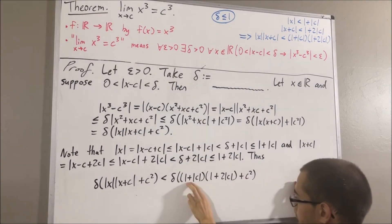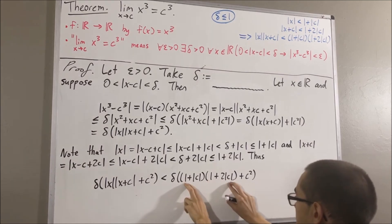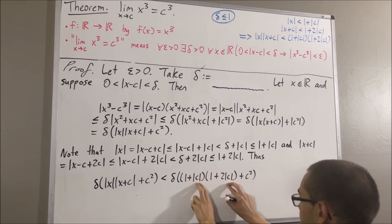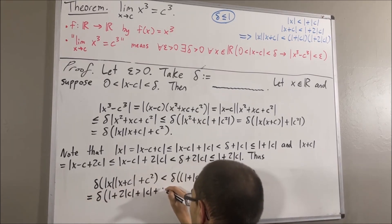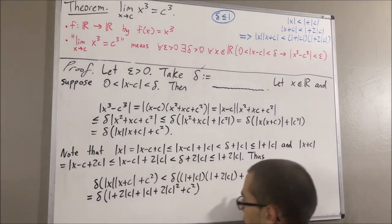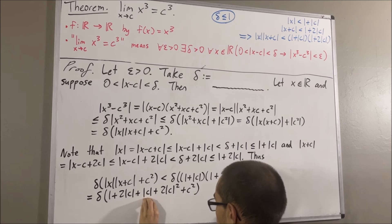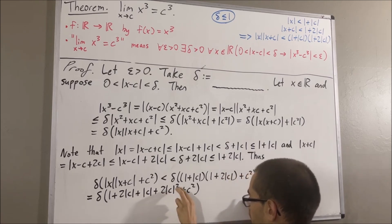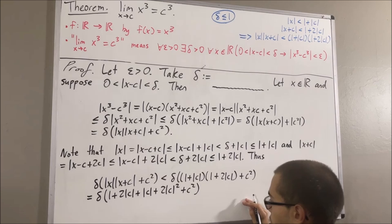Let's multiply these two factors out. We get 1 plus 2 times the absolute value of c plus the absolute value of c plus 2 times the absolute value of c squared. Combining like terms, 2 times the absolute value of c plus the absolute value of c equals 3 times the absolute value of c. And 2 times the absolute value of c squared is equal to 2c squared, so together with c squared we get 3c squared. So the expression simplifies to 1 plus 3 times the absolute value of c plus 3c squared.